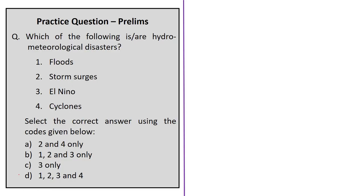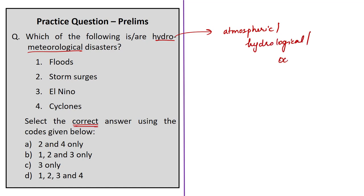The practice question on hydrometeorological disasters asks which of the four options — floods, storm surges, El Niño, and cyclones — are hydrometeorological disasters. Since a hydrometeorological disaster is a process or phenomenon of atmospheric, hydrological, or oceanographic nature that may cause loss of life, injury, property damage, social and economic disruption, and environmental damage, all four options result in casualties, economic losses, infrastructure damage, and disruption to normal life. Therefore, all four are hydrometeorological disasters, making the correct answer Option D: 1, 2, 3, and 4.